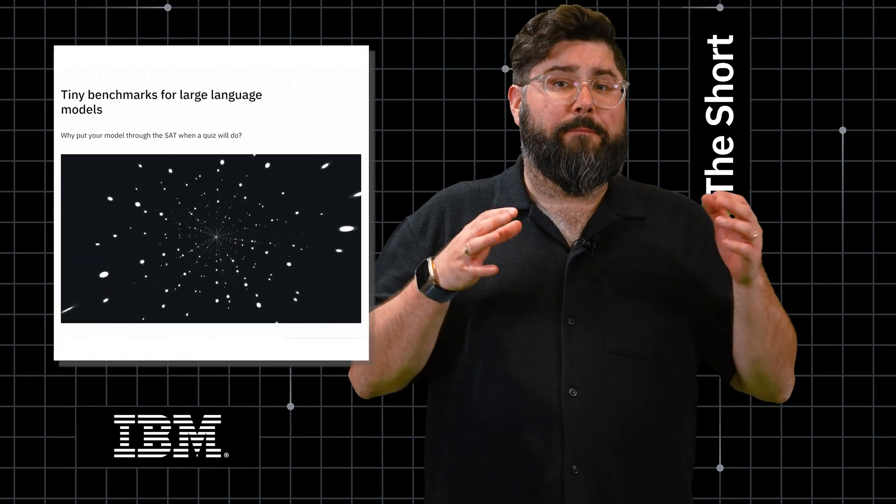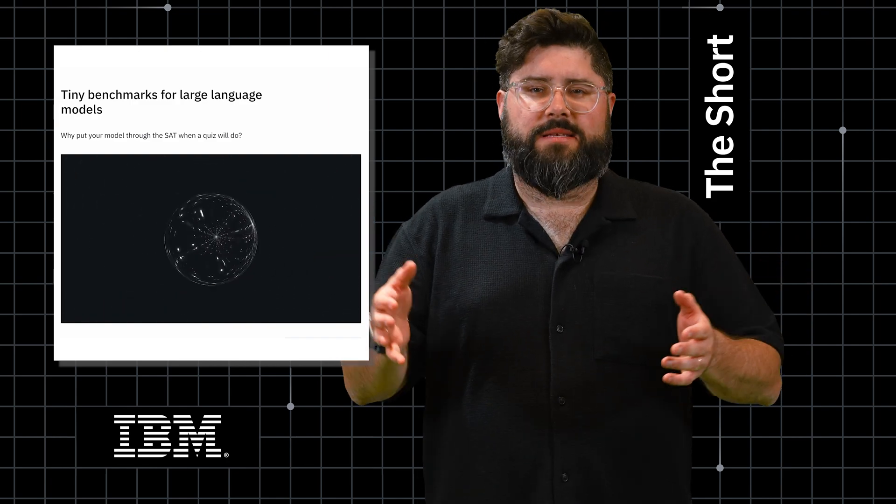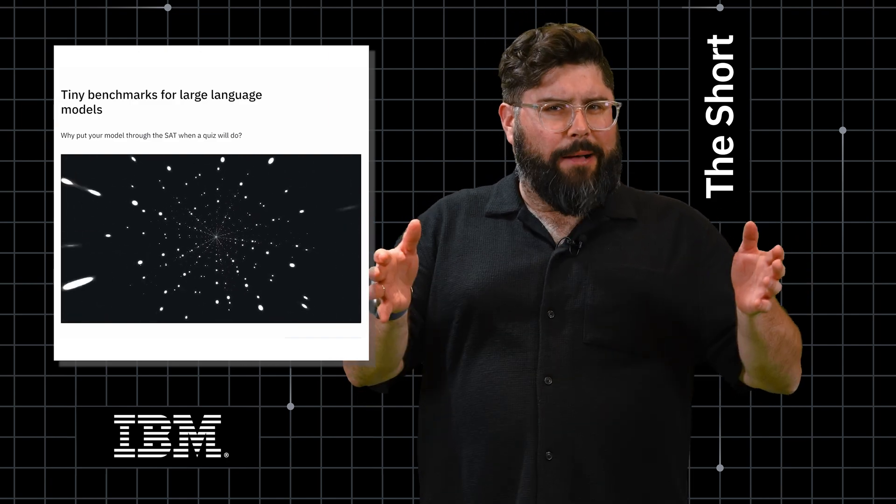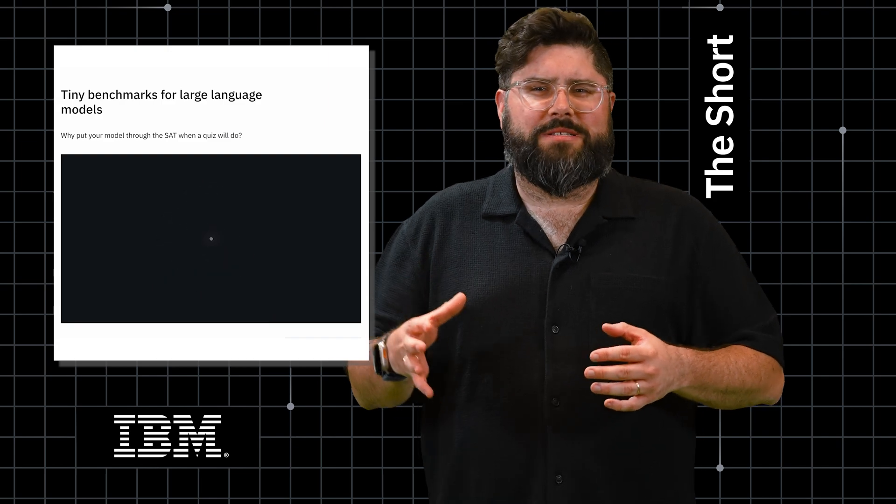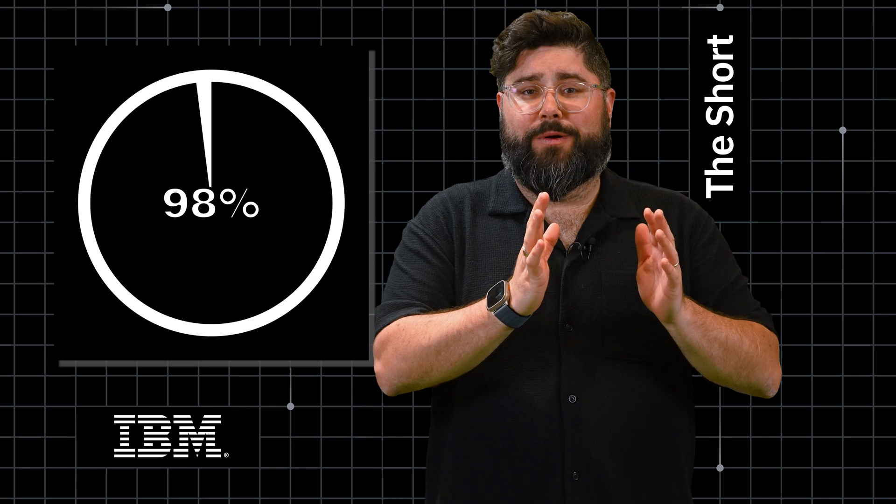IBM researchers out of Israel found a way to benchmark models faster and cheaper. If Helm is the SAT test, their tiny benchmark is a pop quiz. By asking questions that are representative of the entire test, researchers found they could be 98% as accurate with a test that's 1% the size of Helm.